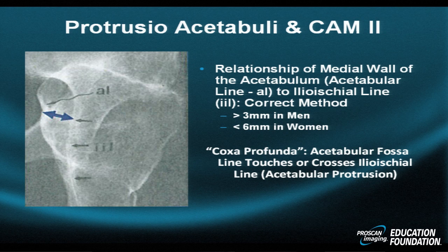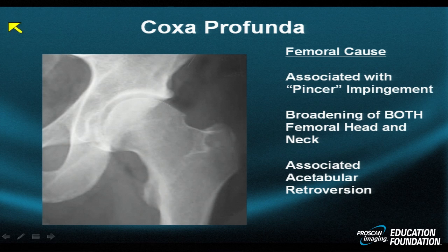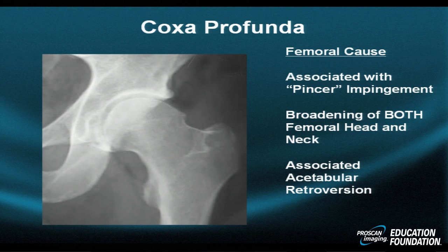This is a difficult concept to understand on a simple frontal radiographic analysis, so let's get a little more simple — and at the same time, a little more fancy. This is an example of a radiograph demonstrating coxia profunda, this time a femoral cause. There is broadening of both the femoral head and the femoral neck, and also, although difficult to see, acetabular retroversion — crossing of the lines we discussed previously. This combination of too large a head and neck, along with acetabular protrusion, produces a compound situation in which FAI2 predominates.